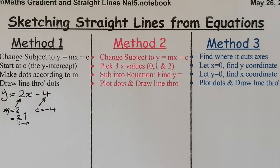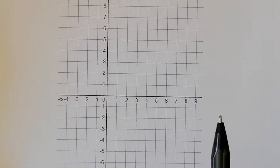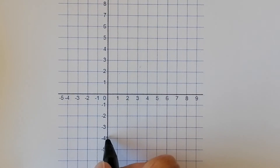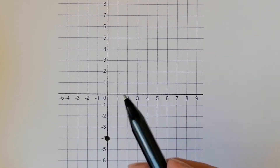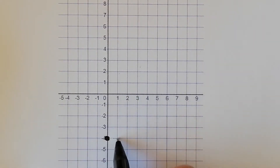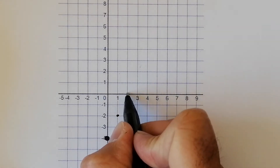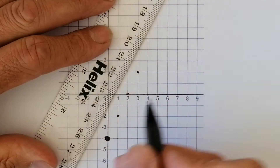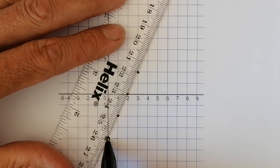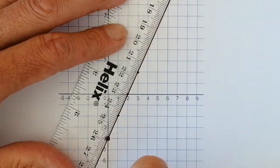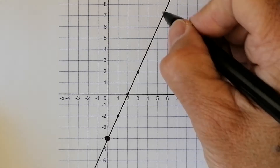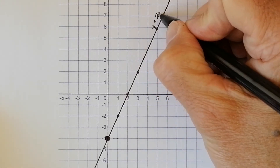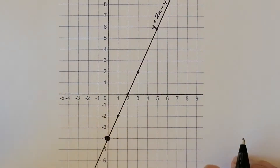So with c equals minus 4 and gradient 2, my first point is at 0, minus 4. I then go along 1 and up 2 to get another point, and repeat — along 1, up 2 — building several dots. I draw a straight line through these dots and there's the first line: y equals 2x minus 4. It's as simple as that using Method 1.